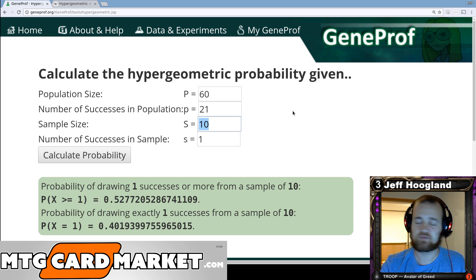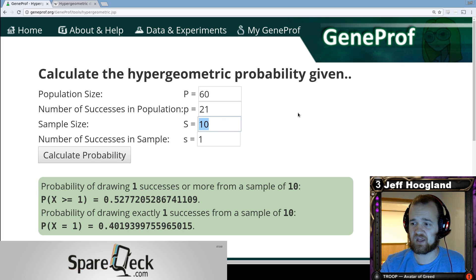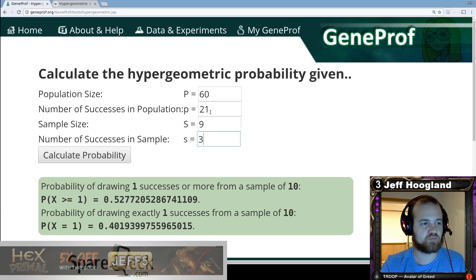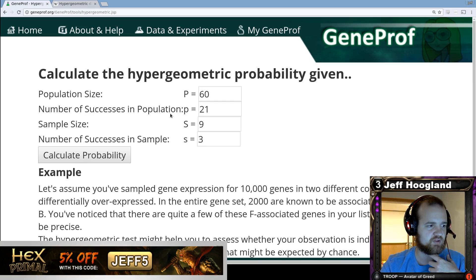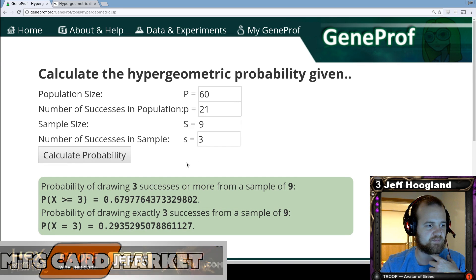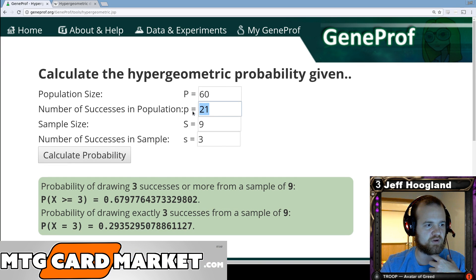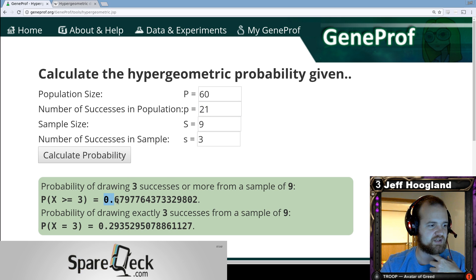My sample size would be by turn three. I have seven cards in my opening hand and then a draw on turn two and a draw on turn three. So I've seen nine cards and I need at least three of these 21 things to be able to play myself successfully on turn three. So we hit calculate probability after entering all of those in. And you'll see here it says, well, with 21 blood producing resources in my resource base, I would have a 67 or almost 68% chance to be able to play myself on turn three.